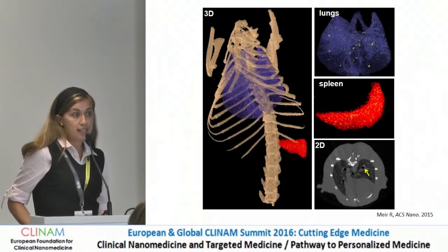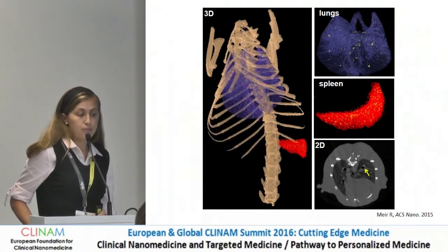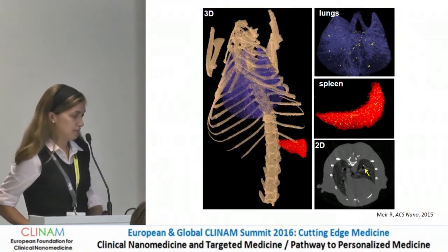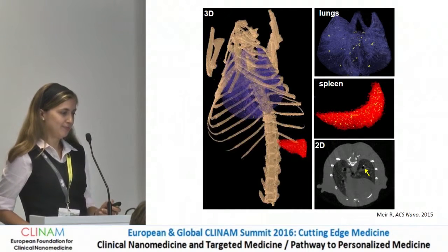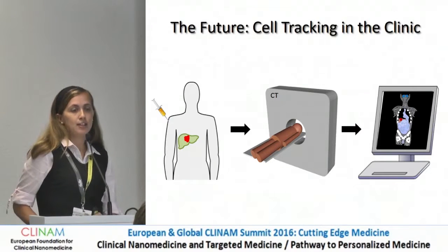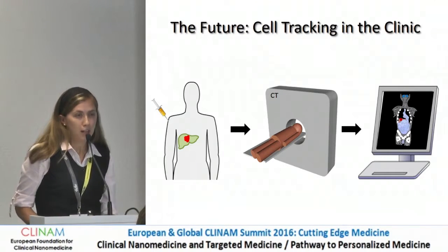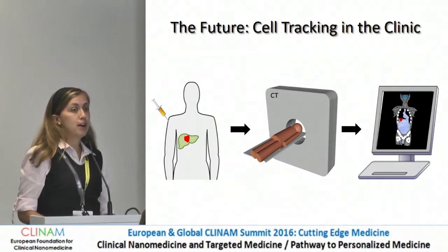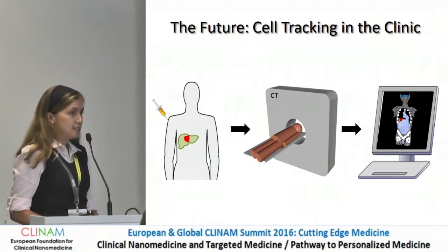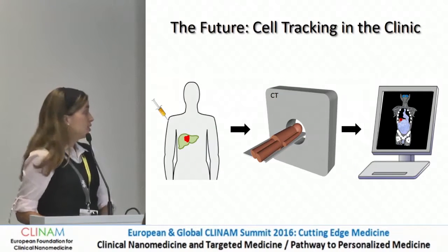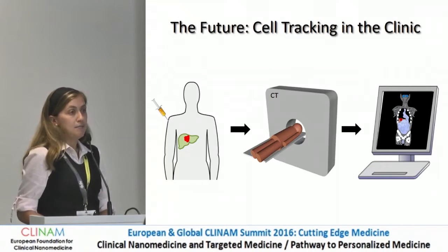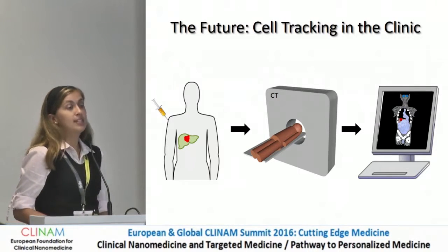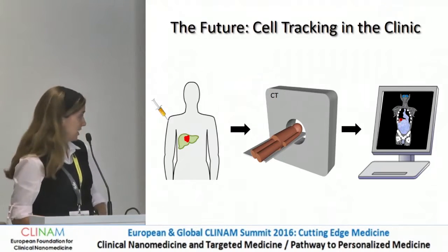We could also scan other parts of the body — for example, T cells in the lungs and the spleen, with both 2D and 3D images. The ability to inject cells and then see them in the body will help advance cell therapy to the clinic. CT is one of the most convenient imaging tools used in hospitals today, and if we're able to answer whether the cells reach their target, this would advance cell therapy to the clinic. Thank you very much for listening.